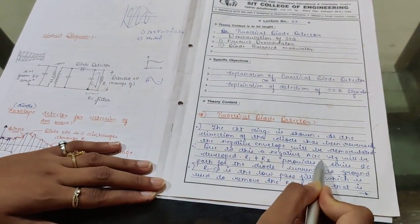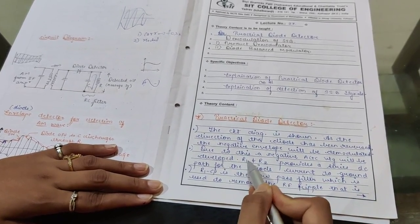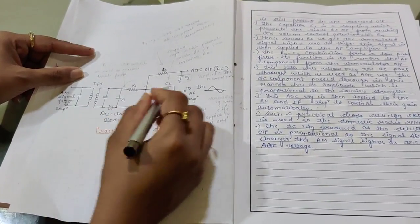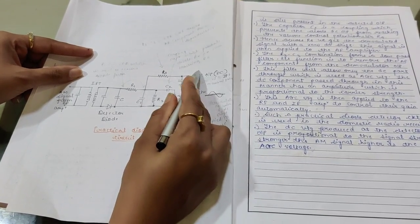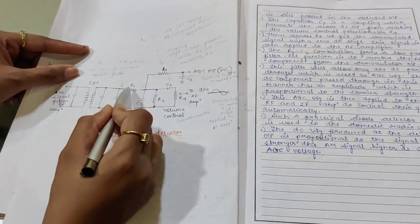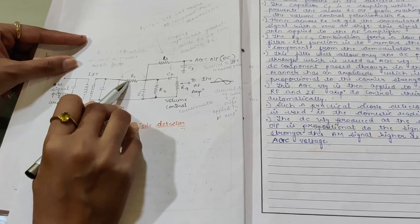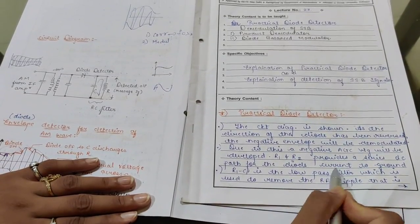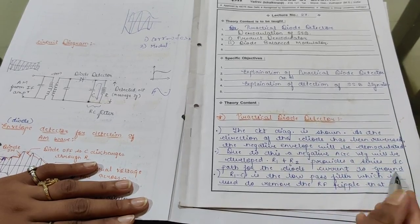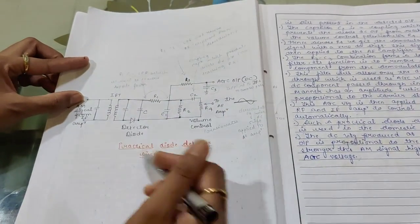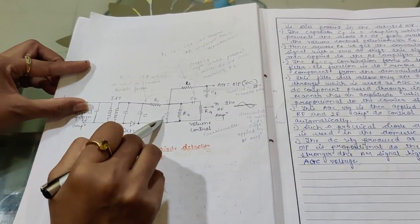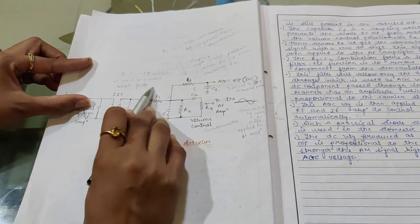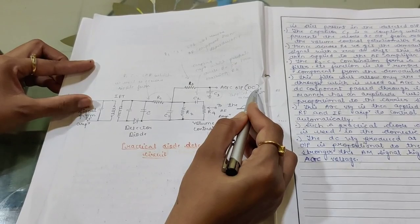Due to this reversed connection, a negative AGC voltage is developed across R1 and R2. Resistors R1 and R2 provide a series DC path for the diode current to ground, serving as the discharge path for the capacitors. In this diagram you can also see that capacitor C1 and resistor R1 form a low pass filter, which is used to remove the ripple factors produced at the DC components.